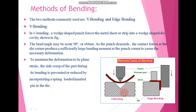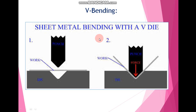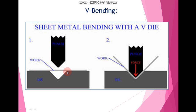In this diagram we have a V-shape punch which applies the force over the material in the die cavity and we get the bending operation. In the first diagram, this is the die and this is our work piece which is straight, and this is our V-shape punch. When we apply the force with the help of this punch over the work piece, we get the bending operation as shown in the second figure.